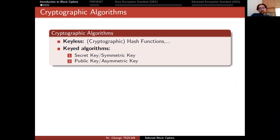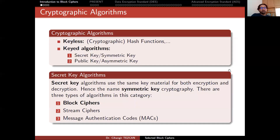If you remember, we tried to categorize cryptographic algorithms. We said that some algorithms do not have any keys, so we call them keyless cryptographic algorithms — the best example is hash functions. Keyed algorithms can be divided into two: symmetric key and asymmetric key cryptography. Block ciphers are part of secret key cryptography, i.e., symmetric key cryptography. Secret key algorithms use the same key material for both encryption and decryption, hence the name symmetric key cryptography.